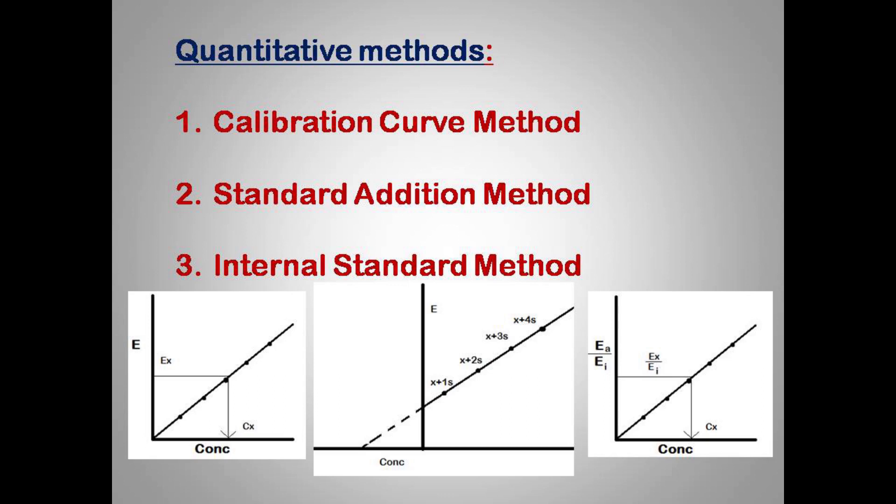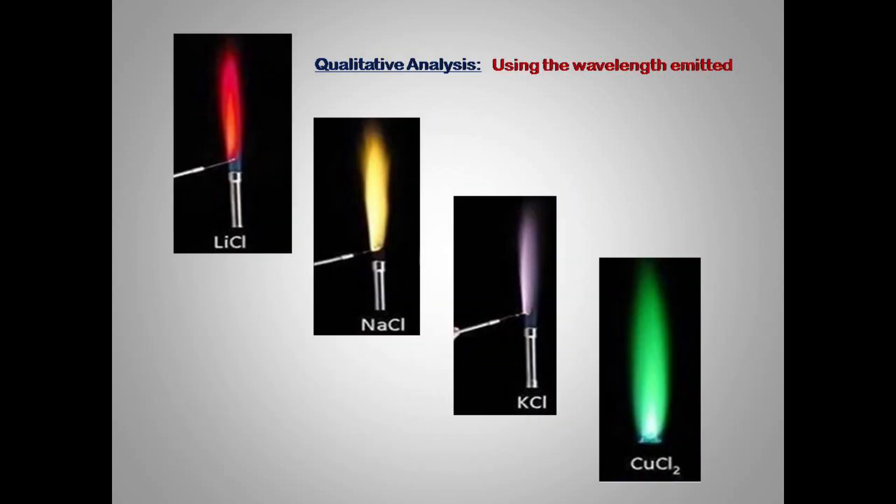Flame emission spectroscopy also has application in qualitative analysis. How can we perform qualitative analysis using flame emission spectroscopy? If you remember this image, where we have seen different atoms are imparting different color to the flame, it is because each atom can emit its own characteristic radiation. By measuring this characteristic radiation in terms of their wavelength, we can find out which atom is emitting this radiation on the basis of their wavelength. So in this manner, flame emission spectroscopy, which is nothing but an atomic spectroscopy, is used for qualitative and quantitative analysis.